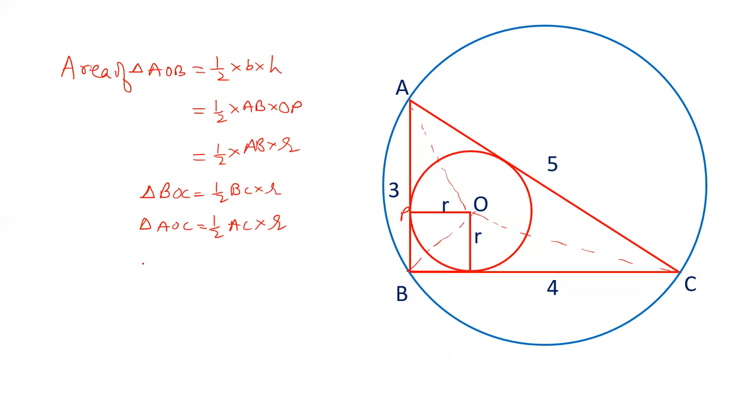If we add the area of all these three triangles AOB, BOC and AOC. Half AB into r, plus half BC into r, plus half AC into r. All these three triangles together form area of triangle ABC. Half we can take common and r also we can take common.